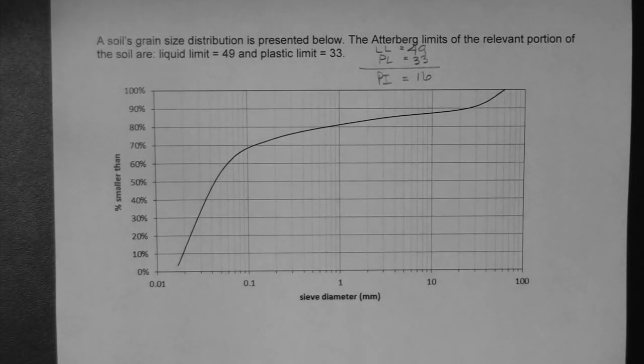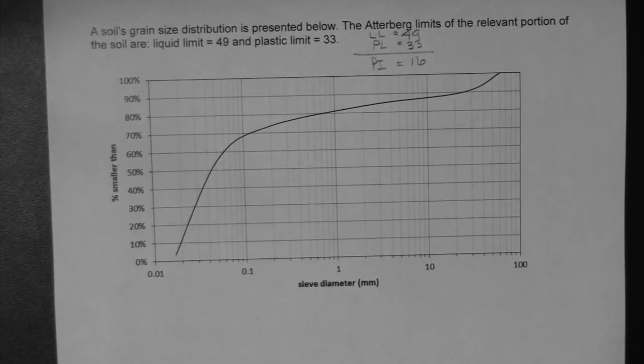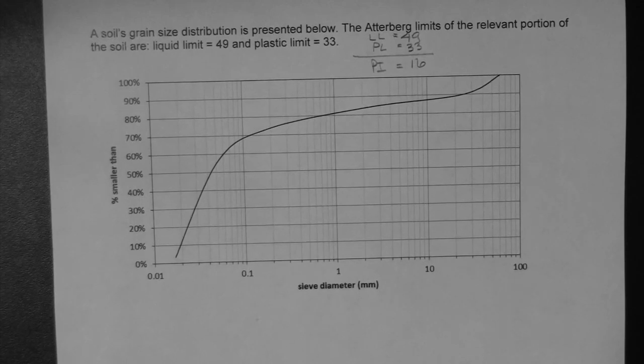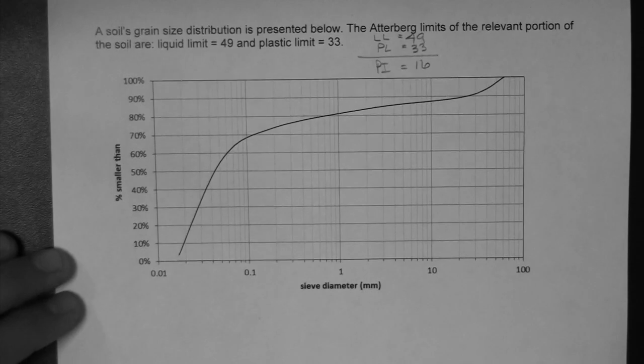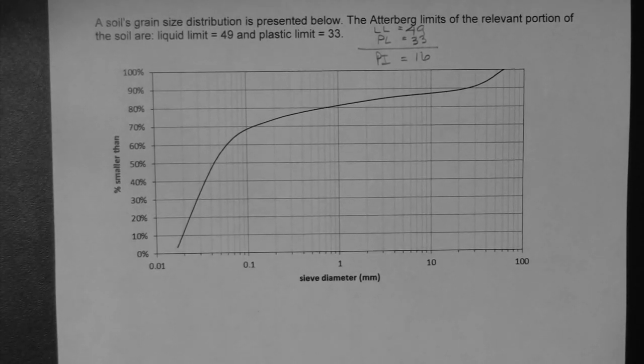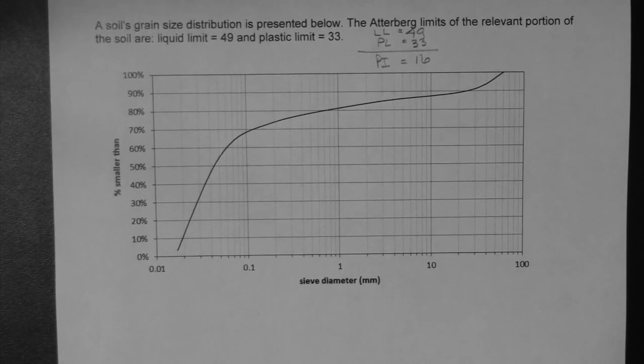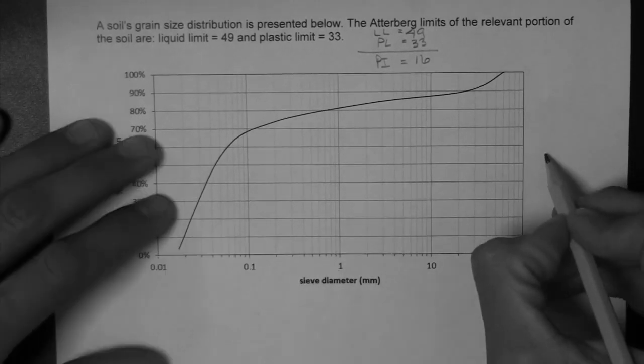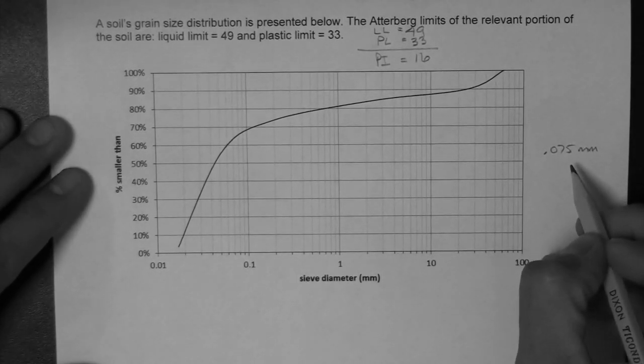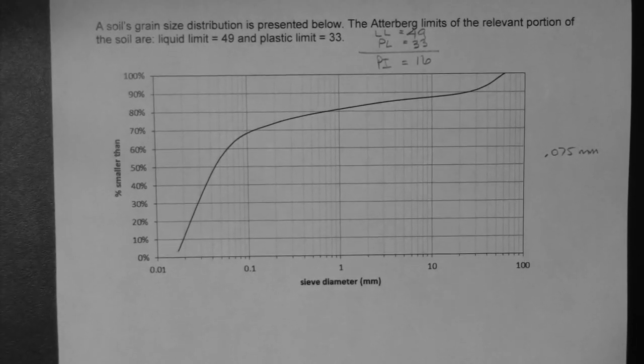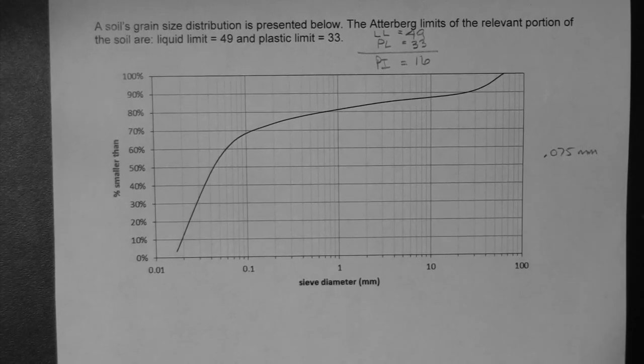The next thing that we have to do, and that's for every classification problem that we do, is that we have to find the percentage of fines. So, the percentage of fines in our soil is the percent of the soil, that is of the mass of the soil, that is composed of grains smaller than 0.075 millimeters. And if the diameter is larger than that, the particle is coarse.